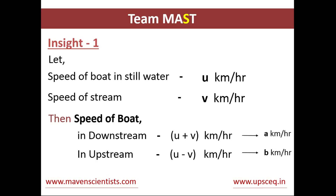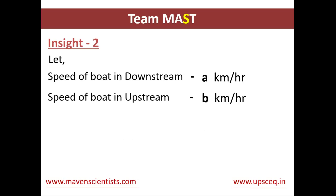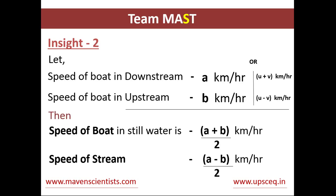So let's go to insight two. Let the speed of the boat downstream equal a and the speed of the boat upstream equal b kilometers per hour. Then the speed of the boat in still water equals (a plus b) divided by 2 kilometers per hour, and the speed of the stream equals (a minus b) divided by 2 kilometers per hour. You have to remember this — we will use these in the following problems.